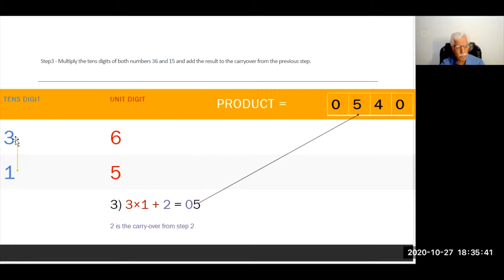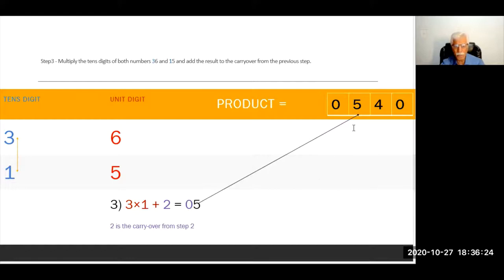Now let's move to the third step. In the third step we multiply the tens digits of both numbers and add the result to the carry over from the previous step. 3 into 1 is 3, and 2 is the carry over from the previous step — because we have 24, four was placed in the second location and 2 remained as carry over. So 3 plus 2 is 5. We move 5 to the third location and 0 to the fourth location. So our product is 540.